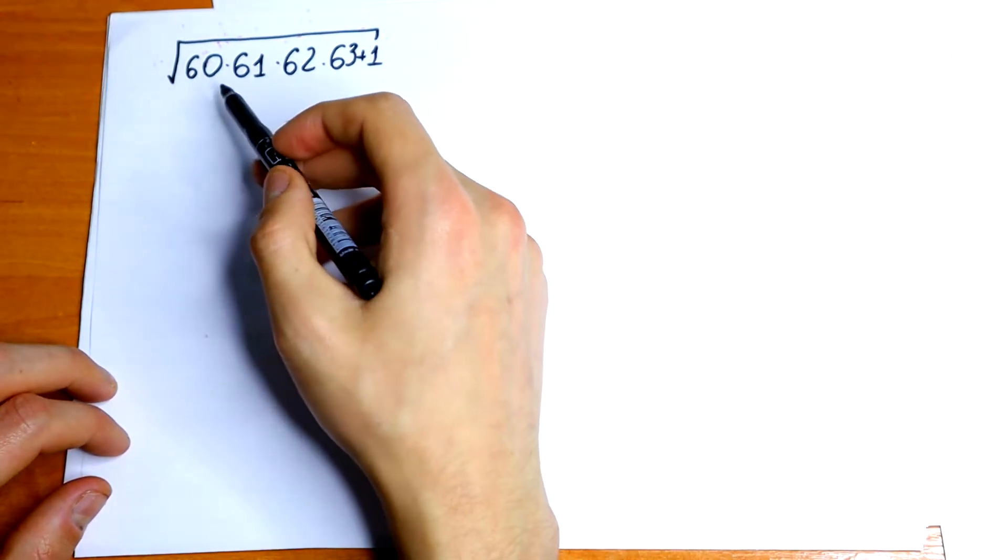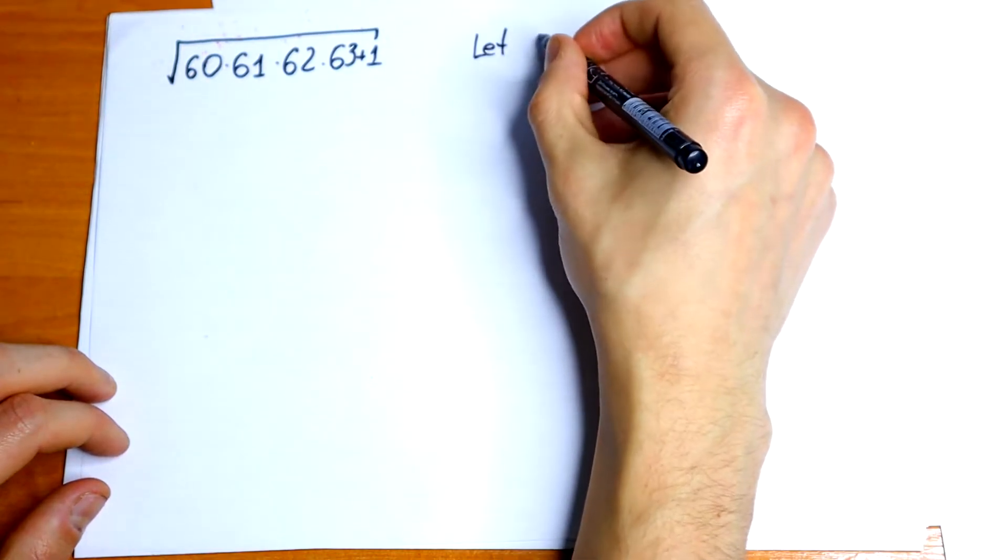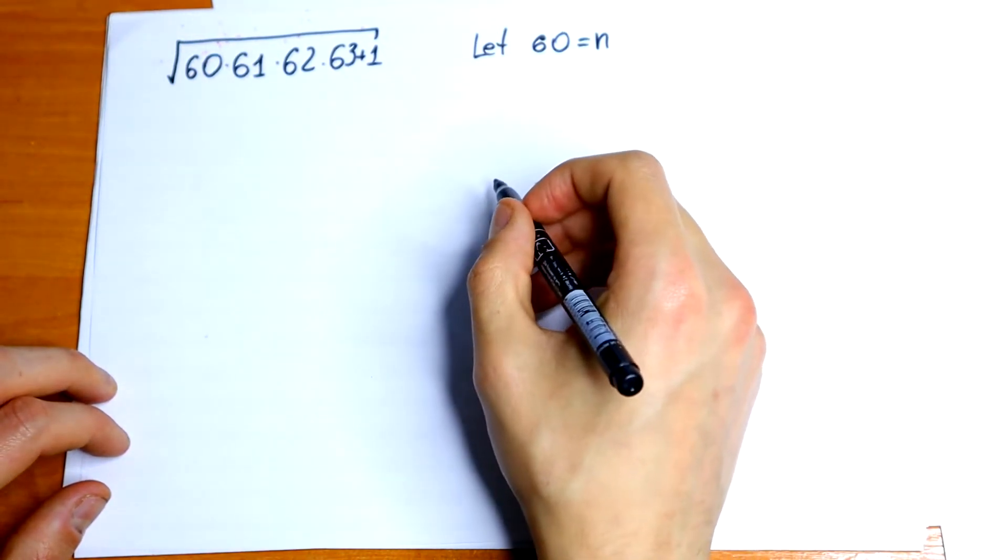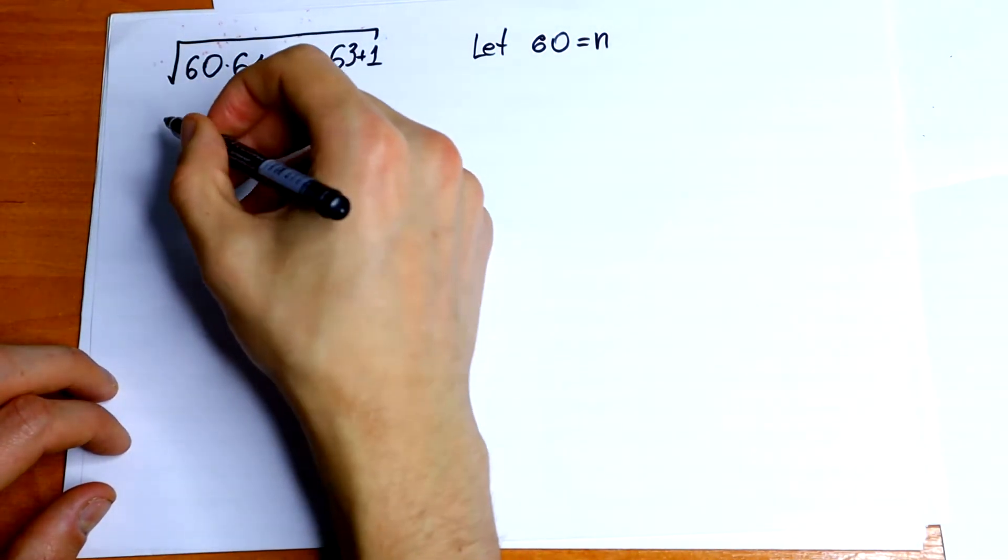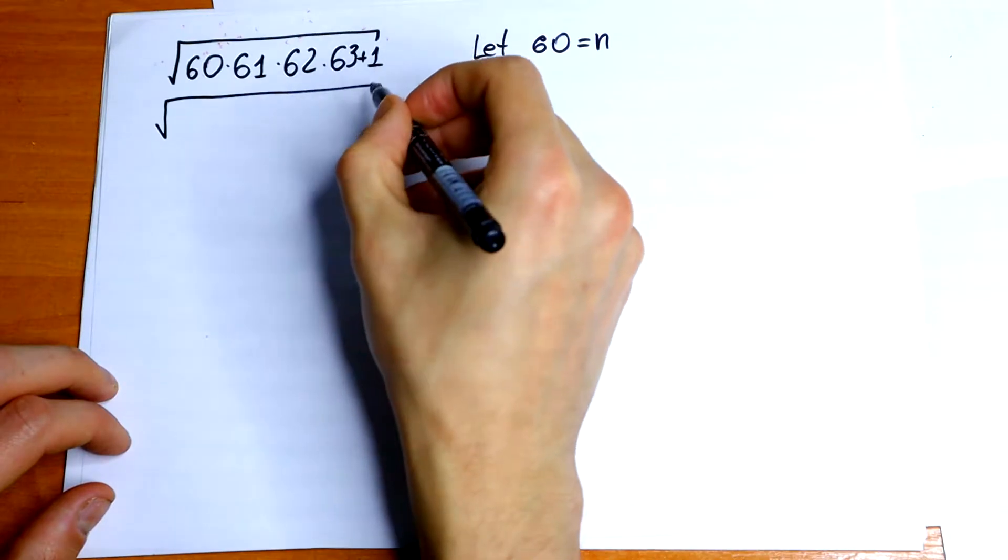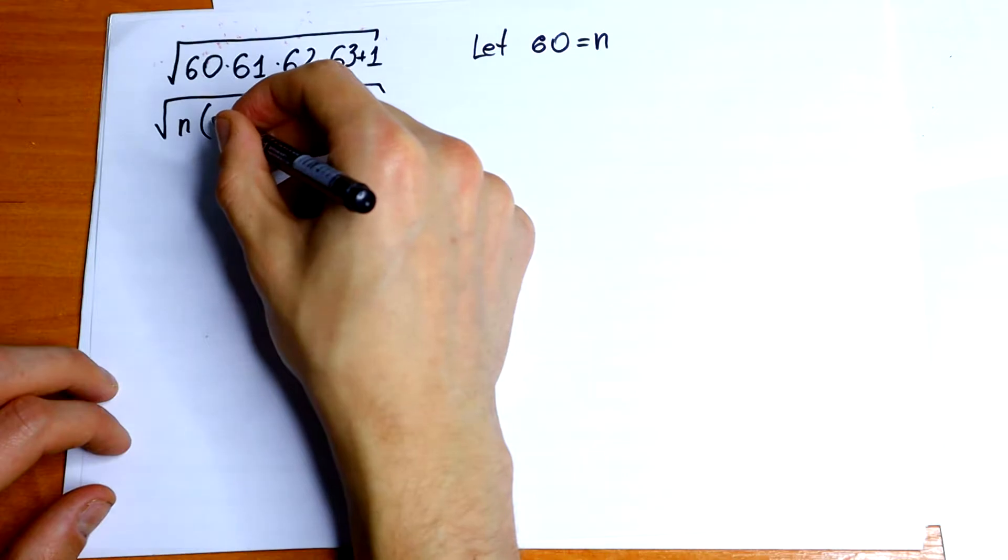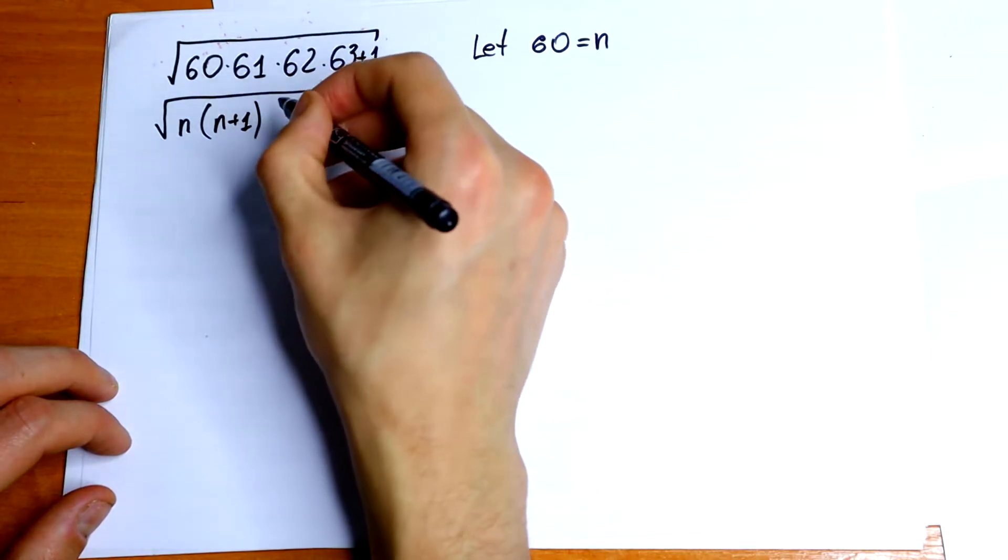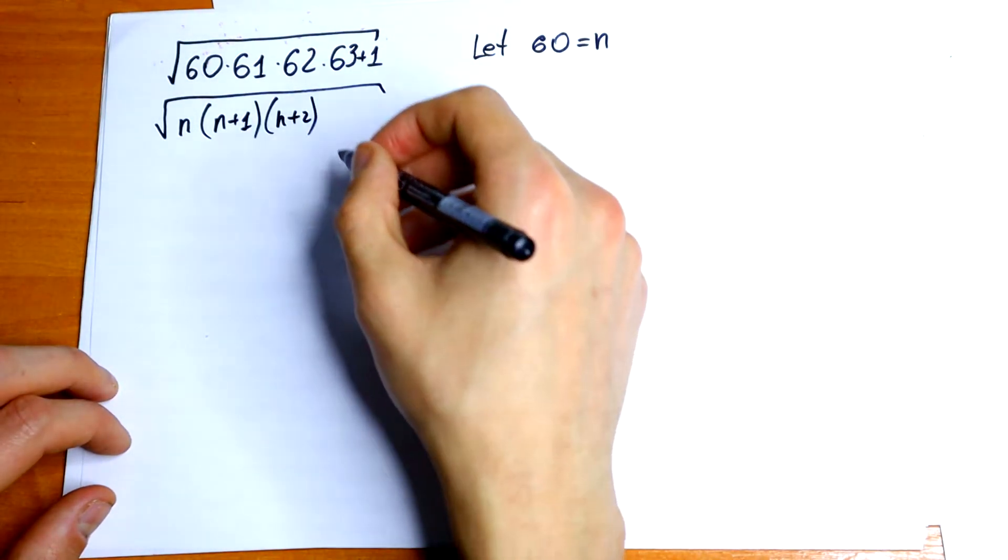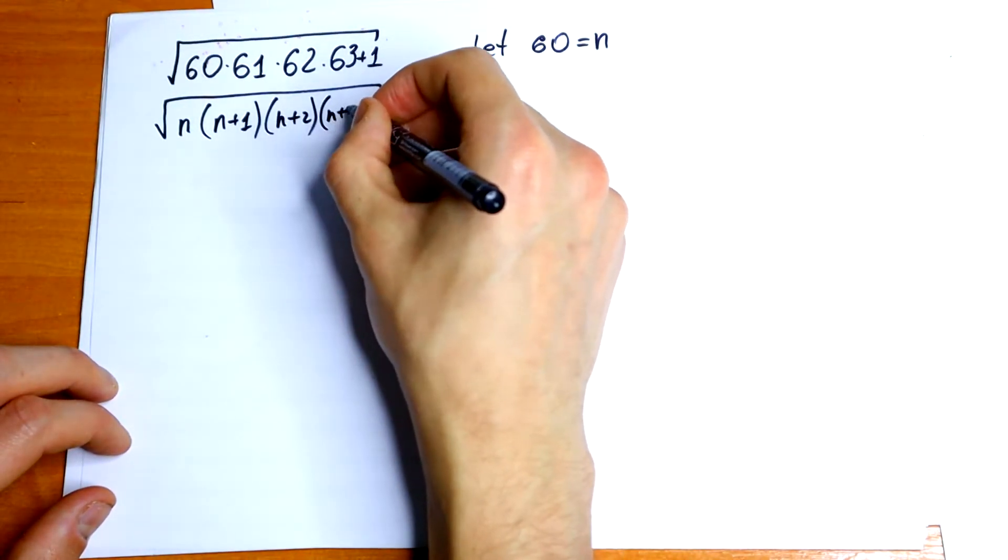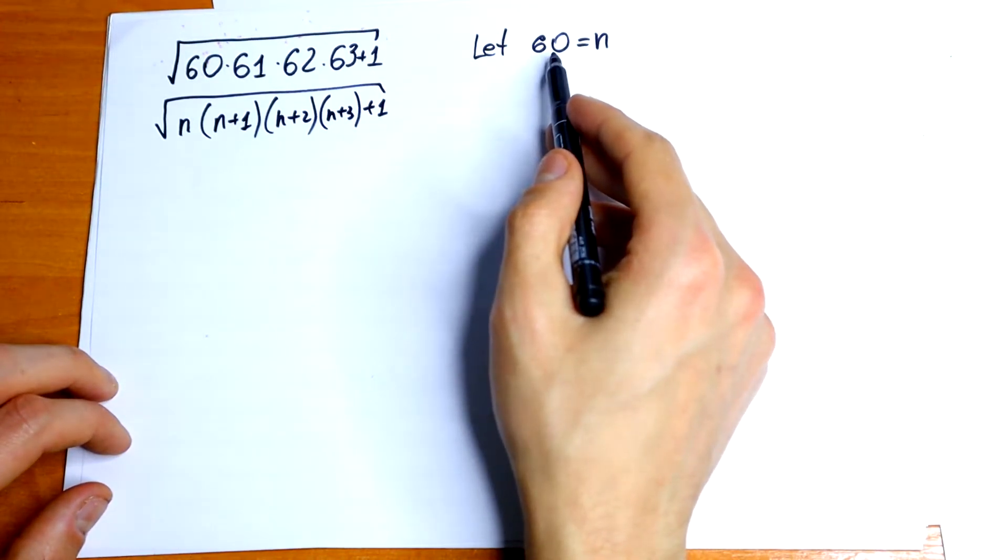Let this 60 as n. So let 60 equal to n. We will get square root of n times n plus 1 times n plus 2 times n plus 3 plus 1. Just put an n instead of 60.